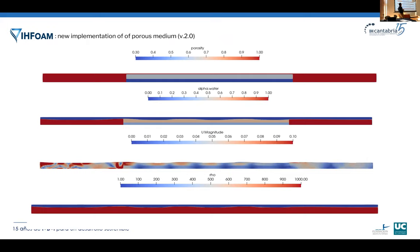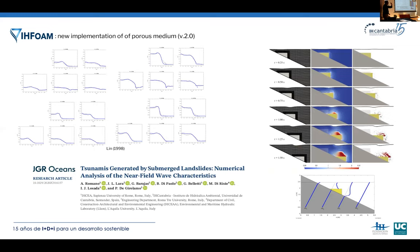We developed a new version of ihFoam that ensures conservation of mass. In this new model, we create two porous zones and bound the volume of fluid (alpha) between zero and the porosity. Outside the porous media the porosity is one, so alpha goes from zero to one; inside the porous media, alpha varies from zero to the porosity. The velocity is damped inside those porous areas and the density is kept constant.